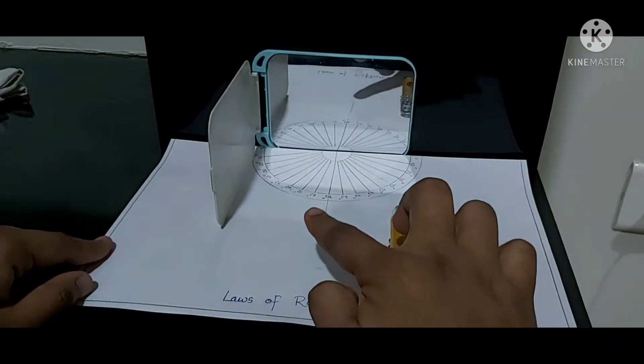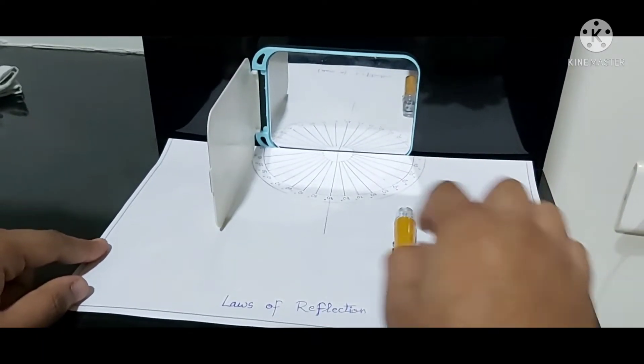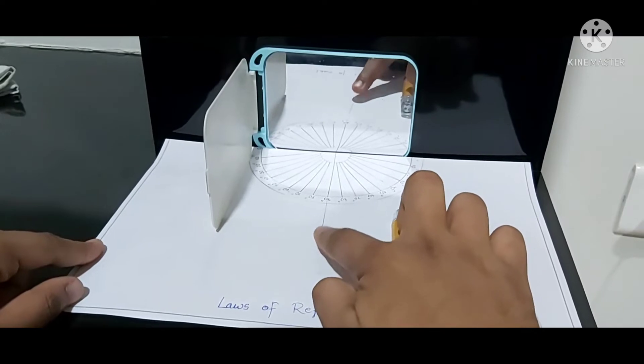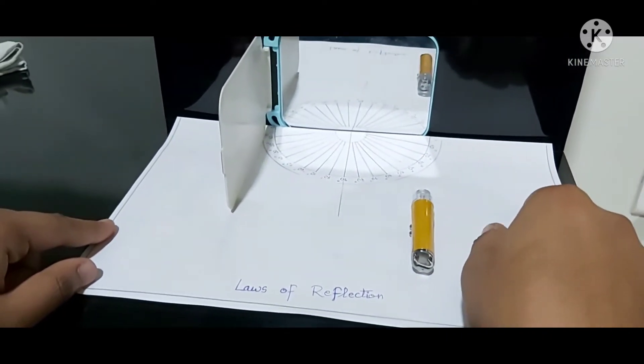We are having a paper on which I have marked all the angles from 0 to 90 and again 90 to 0. This is the normal, the imaginary line that we draw. I am having a plane mirror.